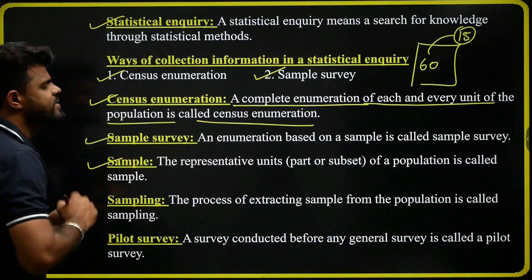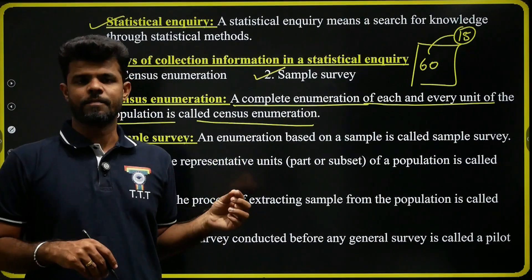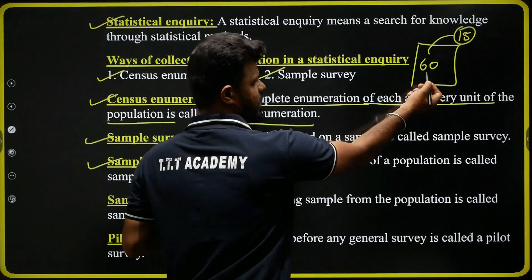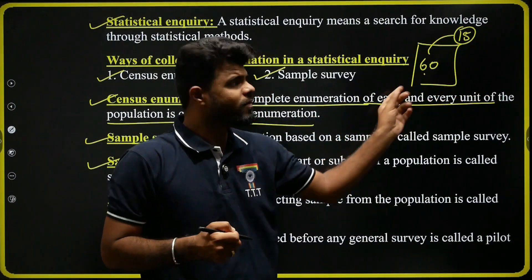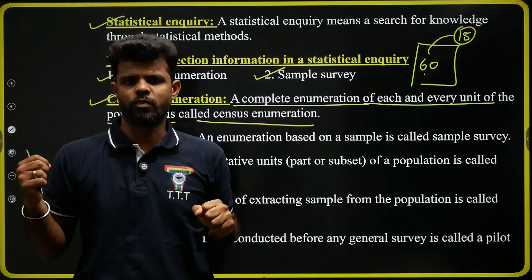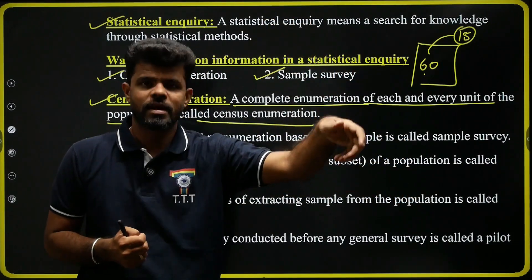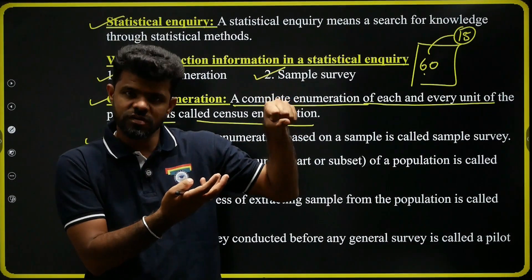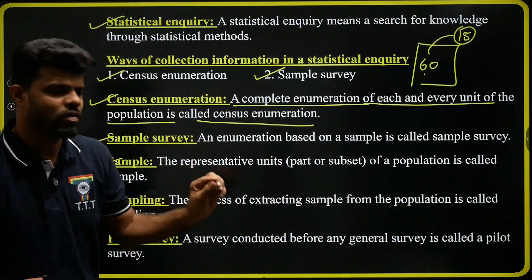Next, what do you mean by sample? A sample is nothing but a representative unit — it is a part of a population, a subset of a population. For example, in a classroom with 60 students, if I select only 5, 10, or 15 students, those selected students are called a sample. When visiting a vegetable shop, the few vegetables you pick to check quality are also called a sample — it is a part of the population.